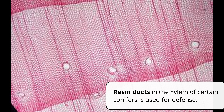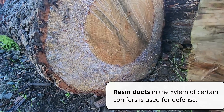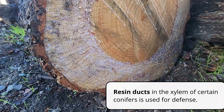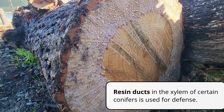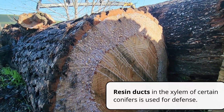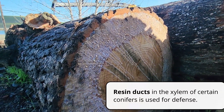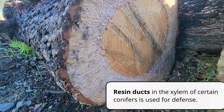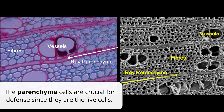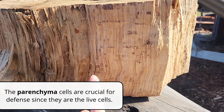Xylem can also play a role in defense. In certain conifers, there are resin ducts embedded in their xylem. When they experience stress — like from drought or insect attack — the ducts will release substances to plug up the xylem and prevent the intruder from spreading throughout the rest of the tree. The parenchyma cells are very important in these processes because they're the live cells within the xylem, and they're able to trigger these changes.